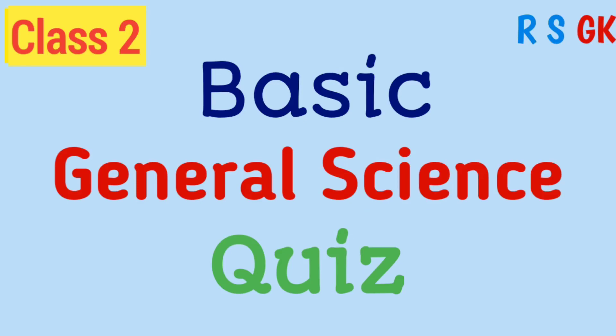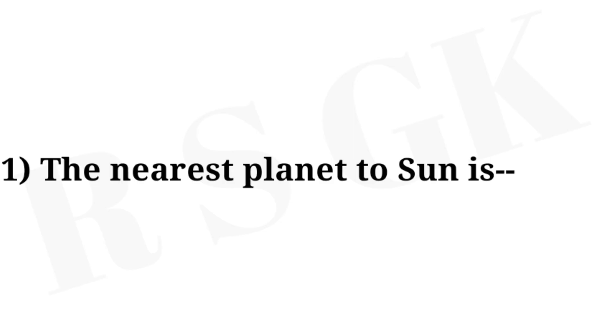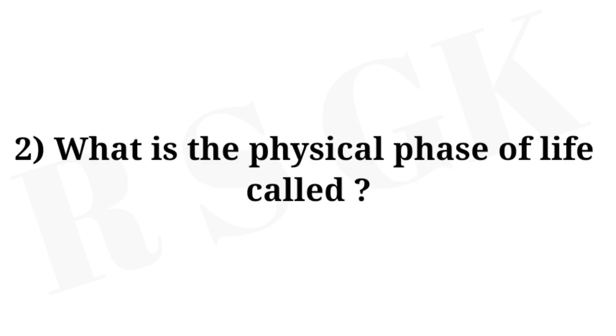Hello friends, welcome to my YouTube channel RFGK. Today in this video we are going to discuss basic general science for Class 2. So let's start. Question number one: the nearest planet to the Sun is? Answer: Mercury. Question number two: what is the physical phase of life called? Answer: Protoplasm.